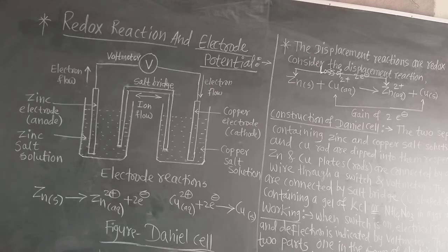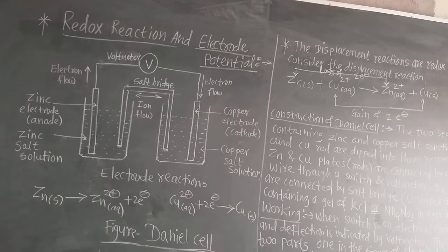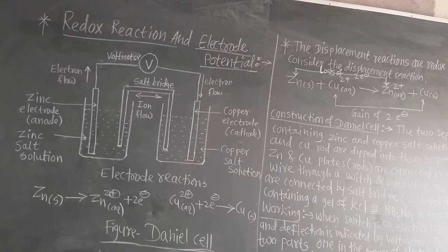Now, here in the Daniel cell — see on the blackboard — if we carry out the redox reaction, there is generation of electricity. In place of the voltmeter, if we connect a bulb, that bulb gets lit. There is formation of electricity; electrons and charge flow. If we connect the wires and switch on, the voltmeter shows a deflection, meaning there is formation of current.